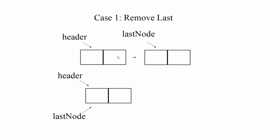We have a linked list like the following. There is only one node here, and this is the dummy node. So in this case, what are we doing? We're doing exactly what the constructor did. Header always has a reference to the dummy node. We are removing the reference to this node, so this part has to be null. And last node gets upgraded to reference the dummy node as well.